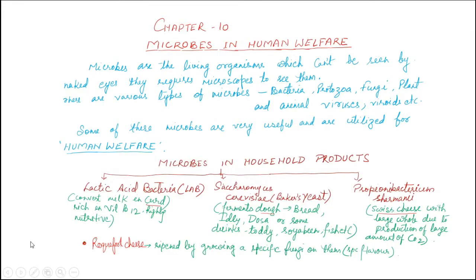Hello students, today we'll study chapter number 10, that is Microbes in Human Welfare. We know that there are various types of microbes — minute organisms which we can't see without any aid like a microscope. Some of these microbes are bacteria, protozoa, fungi, plant and animal viruses, viroids, prions, etc.